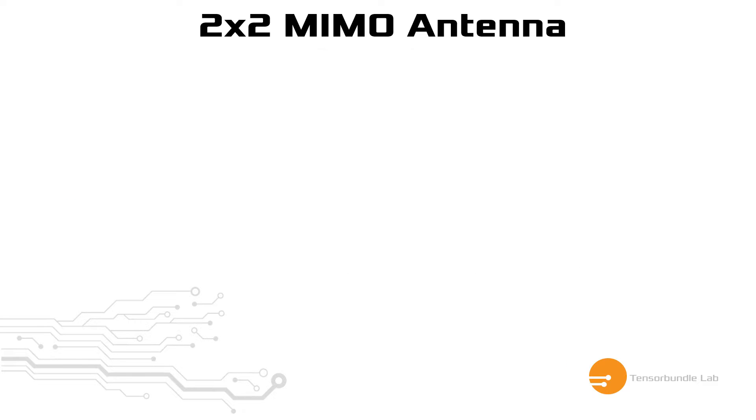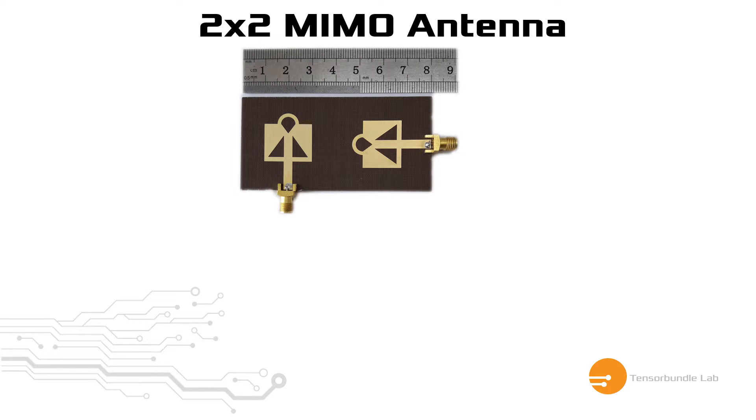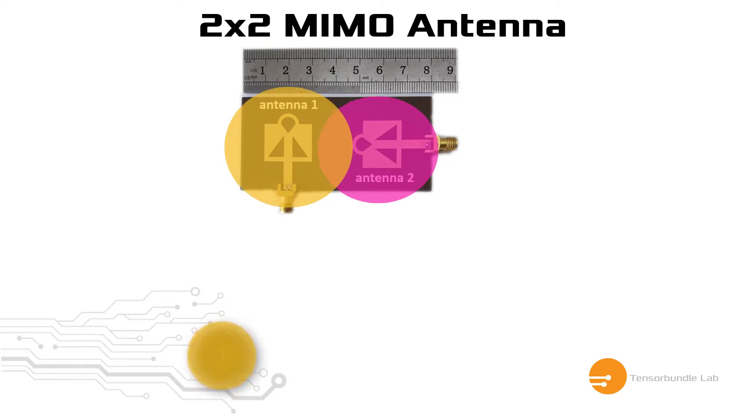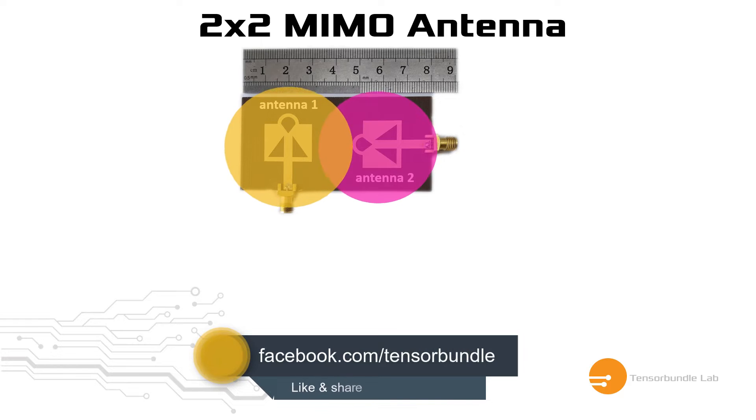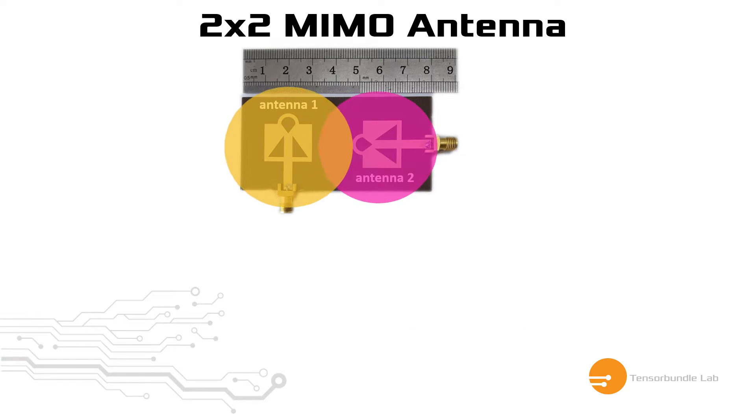If you have a 2x2 MIMO antenna element such as shown in this figure, which has two identical antenna elements, then the antenna elements will talk to each other. The radiation field of antenna 1 will influence the radiation field of antenna 2 and vice versa. This is known as mutual coupling.